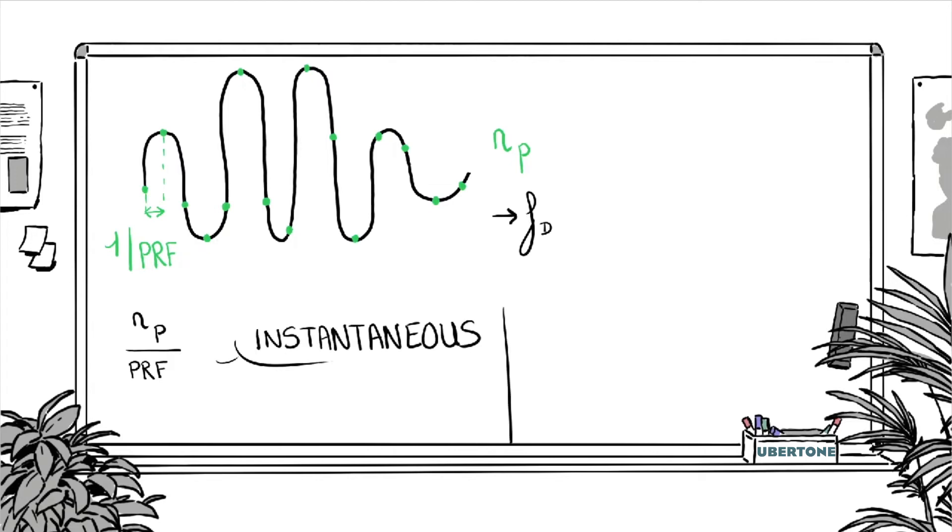Then, it is possible to measure a block of NAVG instantaneous profiles to get an arithmetic average of measured profiles. The delay required to measure one averaged profile is equal to NP times NAVG divided by PRF. These parameters define the timer resolution.